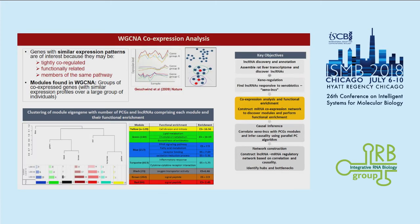We then needed to annotate the function of the lncRNAs, and we used co-expression analysis with WGCNA to come up with seven different protein-coding gene modules, which were enriched for their functional terms. Three of those modules were very relevant to liver: lipid metabolism, cholesterol — an important liver function — an immune-based module, and a PPAR signaling and fatty acid metabolism-based module.